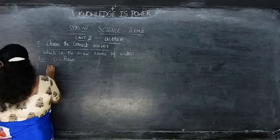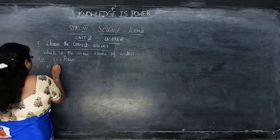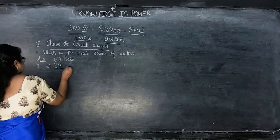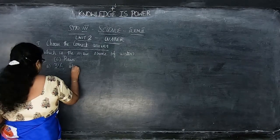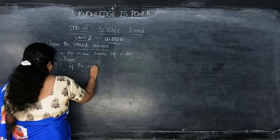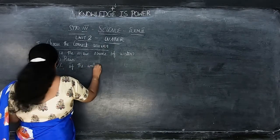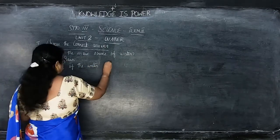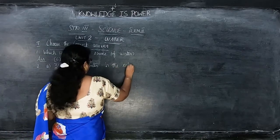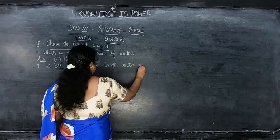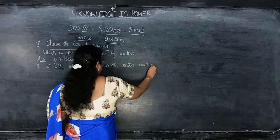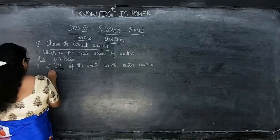Second: dash percent of the water in the entire earth is fresh water. The answer is three percent.